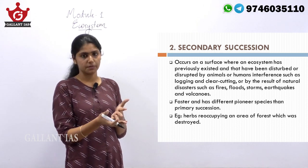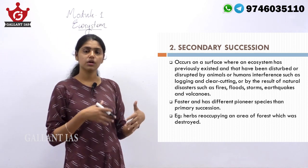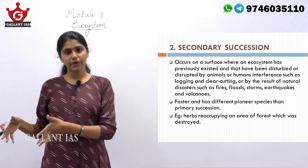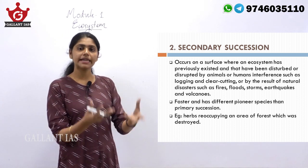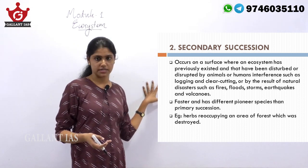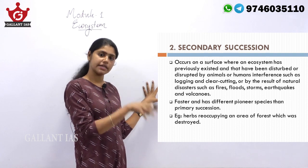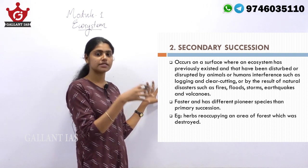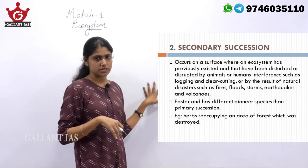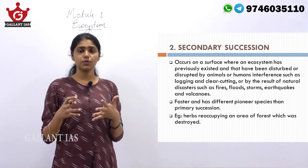Once a forest ecosystem is destroyed, it will be regenerated in the form of shrubs or herbs. Where once an ecosystem prevailed, again a succession takes place from there. Such a type of succession is known as secondary succession — it occurs where an ecosystem once existed but was destroyed by natural or man-made causes.